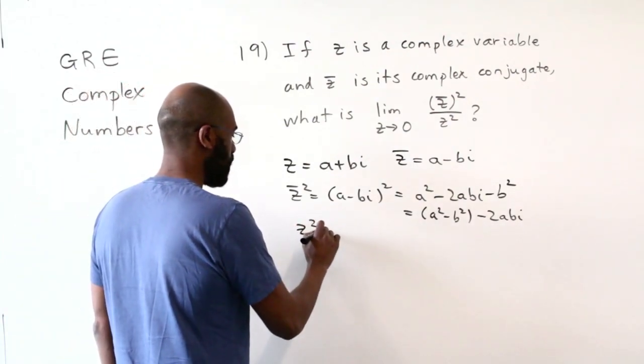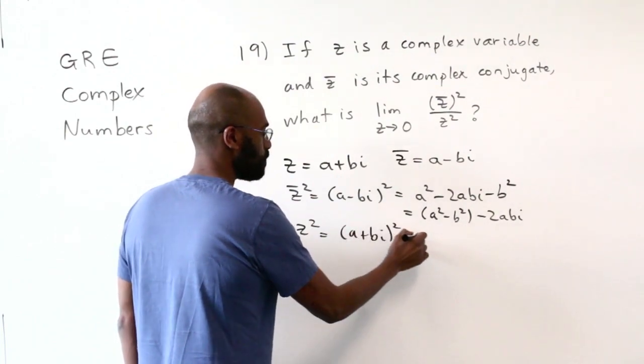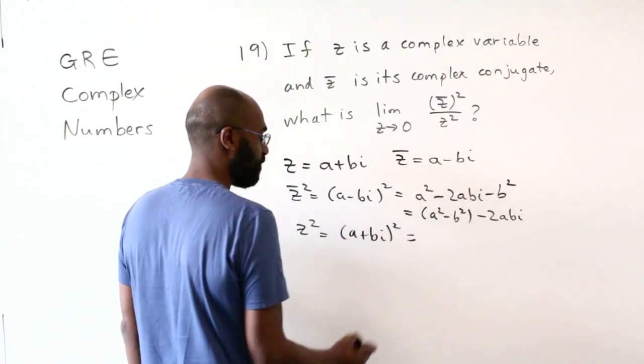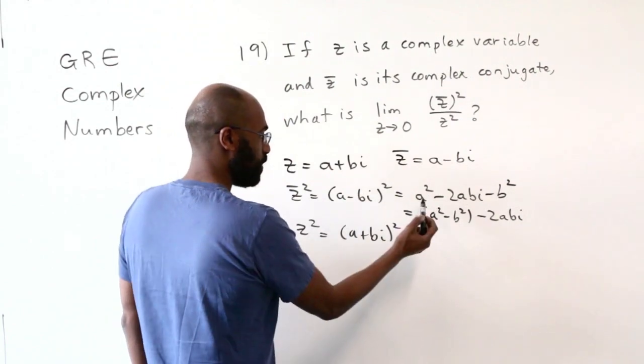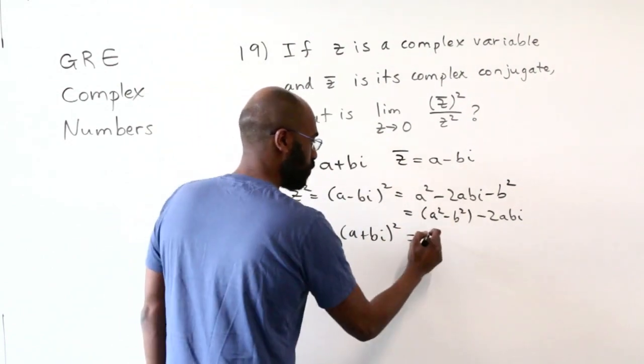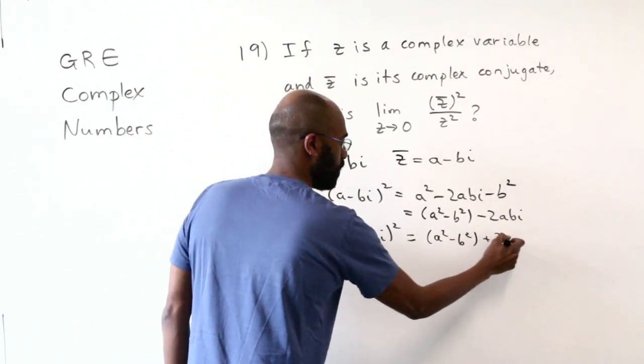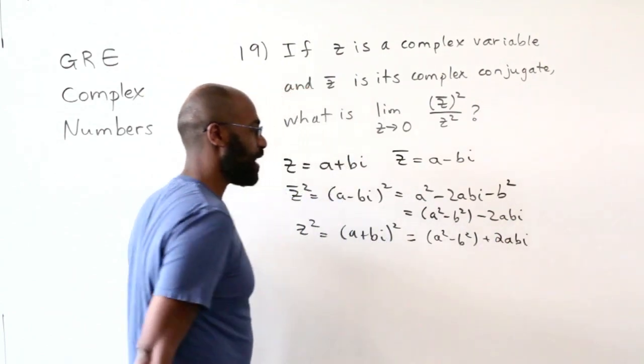Similarly, the square of z is a plus bi squared, which is, by the same phenomenon, going to be this same expression, but with a plus 2i in the middle instead. So we'll have a squared minus b squared as the real part, and then the imaginary part is 2abi.